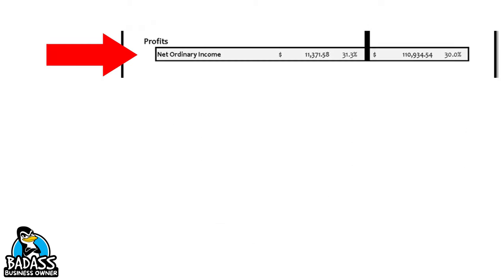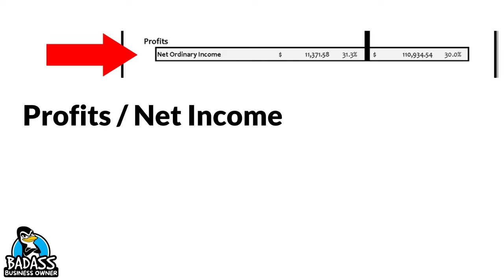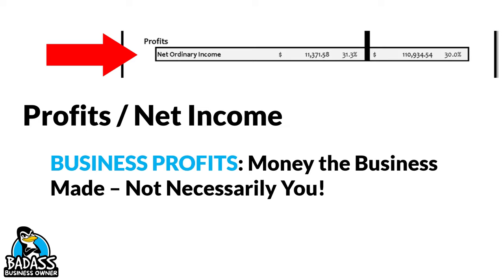The final section is called profits, and this is the line we all love to see — we want a nice, healthy one. Sometimes it'll say profit, sometimes it'll say net income. Just know that they are the same thing. At the end of the day, they are the business's profits. Keep in mind, it's the money the business made, not necessarily you — the business still has business to do.